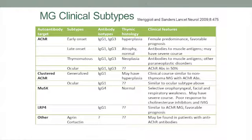This is just a complicated table that you don't need to memorize, so there's no test after the lecture. But just to give you an idea that there are a number of different clinical subtypes of myasthenia based on the antibody type, based on what we find in the thymus, and based a little bit on disease onset.